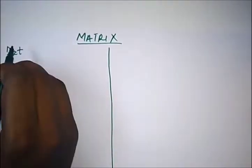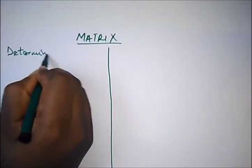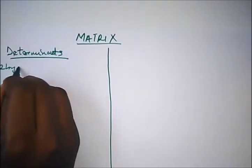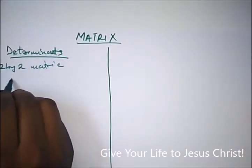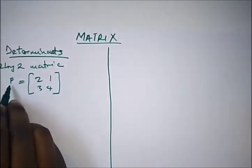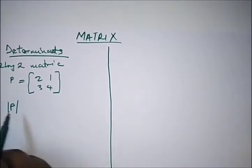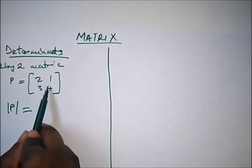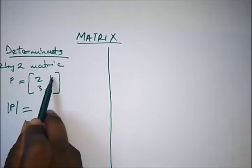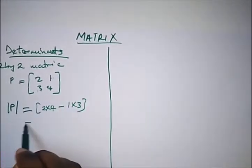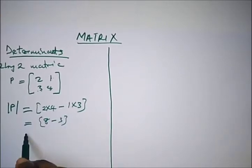...used to represent a given matrix. For example, if we have a 2 by 2 matrix, and we're given P as [2, 1; 3, 4], the determinant of P is represented as |P|. To get a 2 by 2 matrix determinant, you compute 2 times 4 minus 1 times 3, which gives us 8 minus 3, and this equals 5. So the determinant is a single element or number that represents a given matrix.